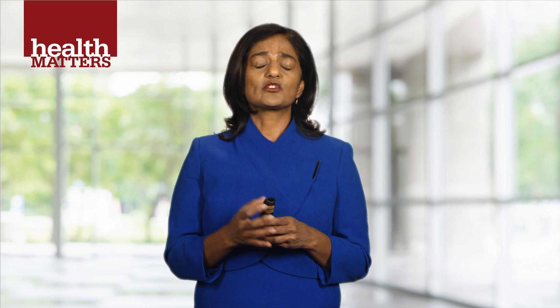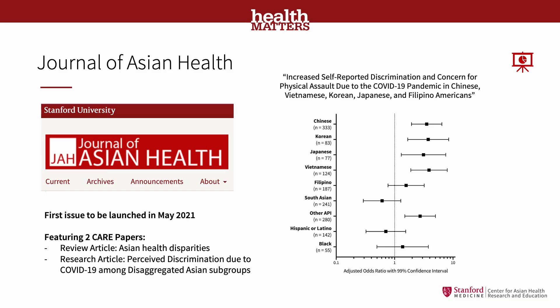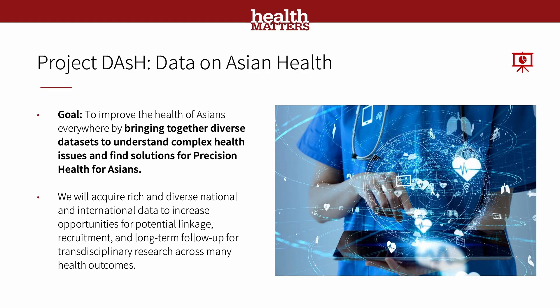One of the things we're doing with the Center for Asian Health Research and Education is starting a journal to aggregate important health information on Asian Americans. One of the first studies is a survey on self-reported bias during COVID-19 in Asian subgroups. Chinese, Korean, Japanese, and Vietnamese populations are experiencing much more discrimination during COVID — unfortunately higher than rates reported by Blacks and Hispanics in the same period. We are also creating a dashboard on Asian health to increase opportunities for linkage, recruitment, and long-term follow-up for transdisciplinary research.